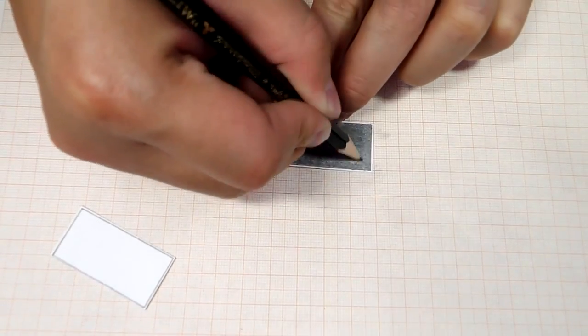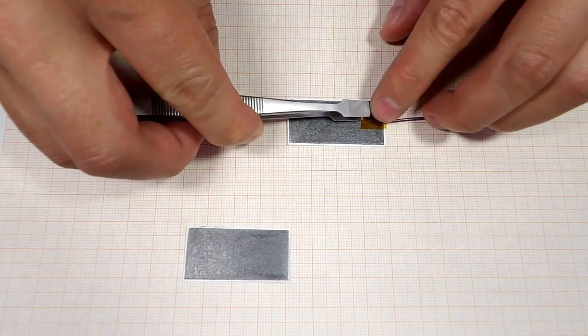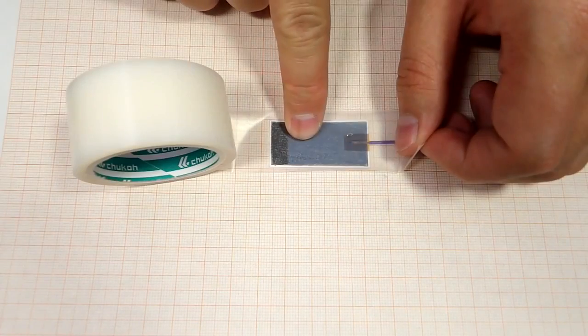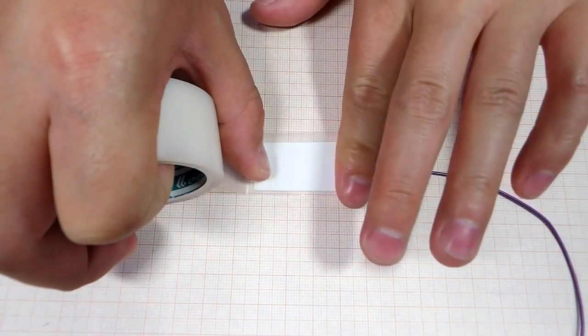These will act as electrodes. Next, tape an electrical wire onto the side of the cards that you rubbed with a pencil, and you can cover them with some teflon tape to protect them. Cover the back of one card with teflon tape.